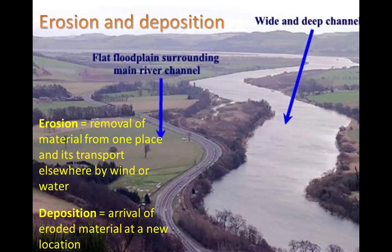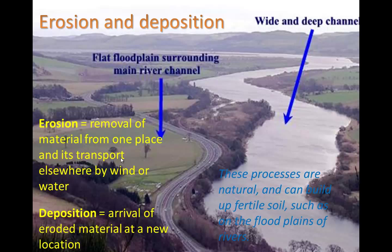Here we see a river with a wide and deep channel. Every once in a while — maybe every few decades, perhaps once a century — this river is going to flood due to intense rains. When it floods, it overextends its banks and leaves behind deposits along what we call the flood plain, which is next to the river. That deposit is usually nutrient-rich soil, so this can be a really good thing. These processes are natural and can build up fertile soil on the flood plains of rivers.